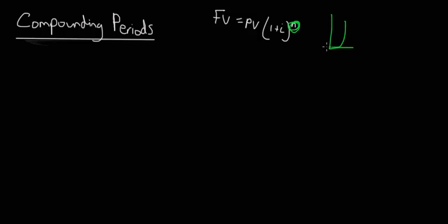The higher this n, the faster this is going to climb, the more interest on interest you're actually going to receive. So the number of compounding periods is obviously very important for that reason.